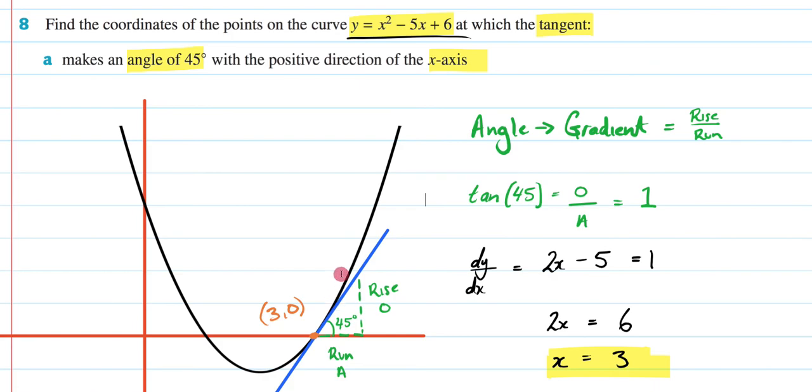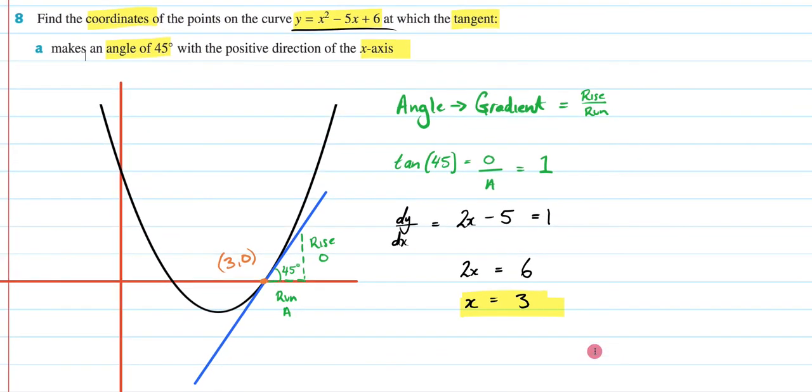Also, notice it says find the coordinates of the point. So, after you figure out that x = 3, what you'd have to do after that is sub that 3 back into this.